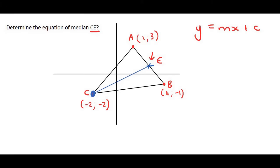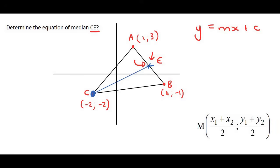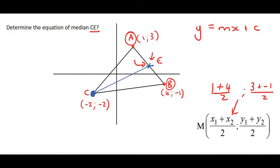Luckily we know that a median is a line that hits the opposite side exactly at the midpoint, so we could work out the midpoint of point E. We can go ahead and find the midpoint of AB using the midpoint formula. So that's going to be (1 + 4) / 2 and (3 + (−1)) / 2. If you work that out you're going to end up with 5/2 and 1. So that would be the coordinates of E.